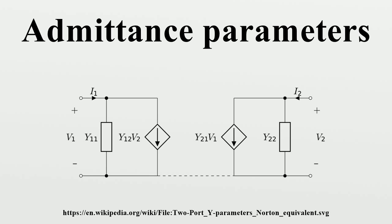The Y-parameter matrix describes the behavior of any linear electrical network that can be regarded as a black box with a number of ports. A port in this context is a pair of electrical terminals carrying equal and opposite currents into and out of the network, and having a particular voltage between them. The Y-matrix gives no information about the behavior of the network when the currents at any port are not balanced in this way.